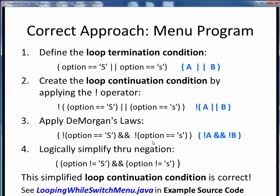Finally, we can simplify this a bit more through the use of negation. Recall the table of not equivalences we just saw. The not of some option being equal to some specific character is simply that option being not equal to that specific character. And this gives us a simplified and correct loop continuation condition. If we stare at this and think about it for a moment, we'll realize that yeah, of course, this is the right answer and we probably could have come up with this on our own with a little trial and error. But this procedure provides us with a systematic set of steps to do that for more complicated logic. For an example of all this put to use, please finish up by viewing the short code walkthrough video for looping while switch menu dot java, which you'll find in the usual place.